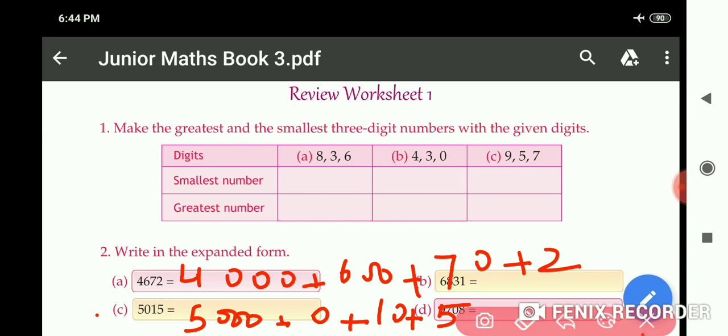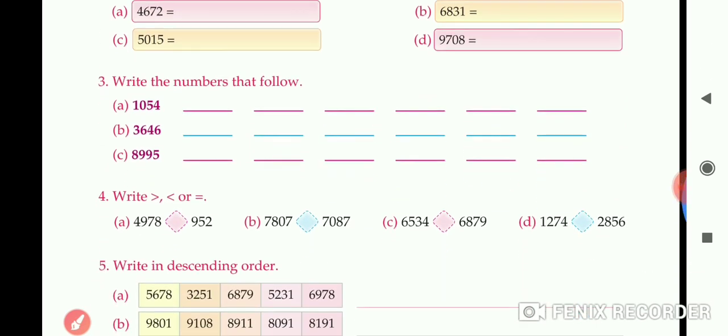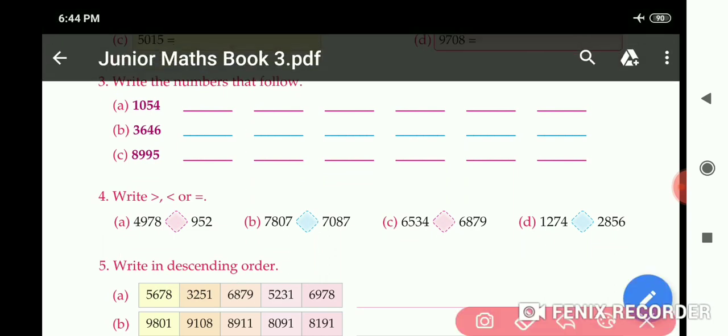Now come to question number 3: Write the numbers that follow. You have to write down the numbers which come after this. Part A: 1054. What will be the next number? 1055, 1056, 1057, 1058.